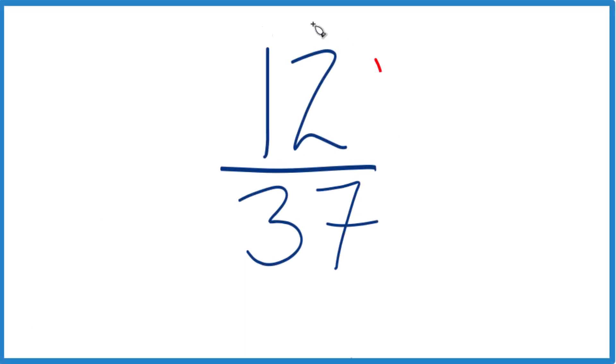If you need to simplify the fraction 12 37ths, here's how you do it. What we need to do is find a common factor. This is a whole number that goes into 12 and 37 evenly. So let's write the factors here for 12 and for 37.